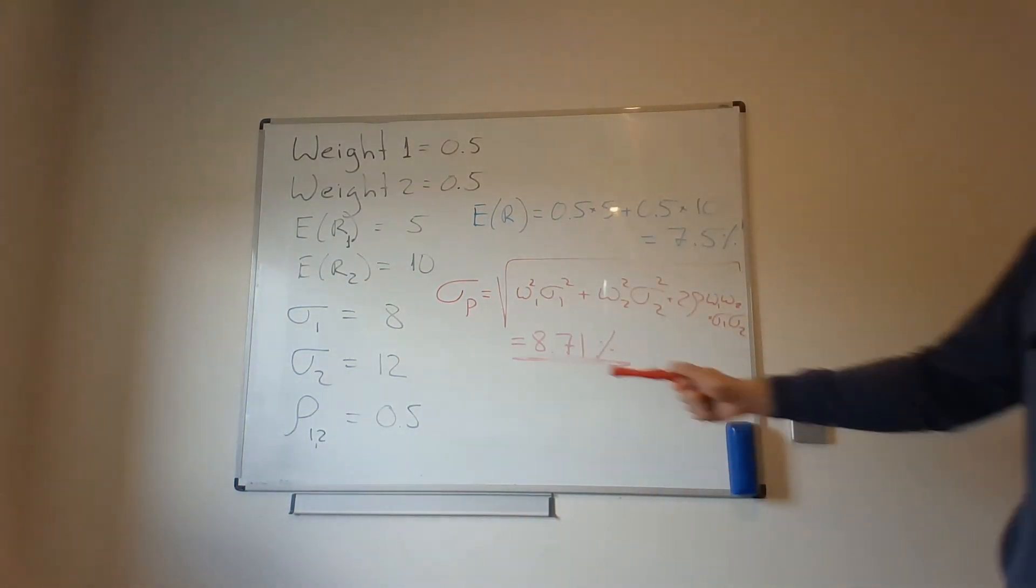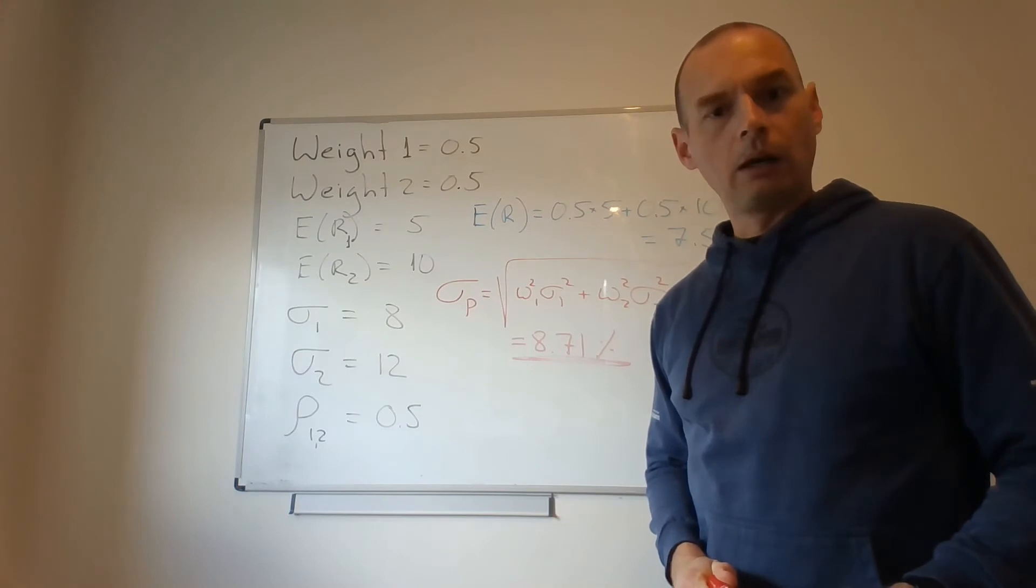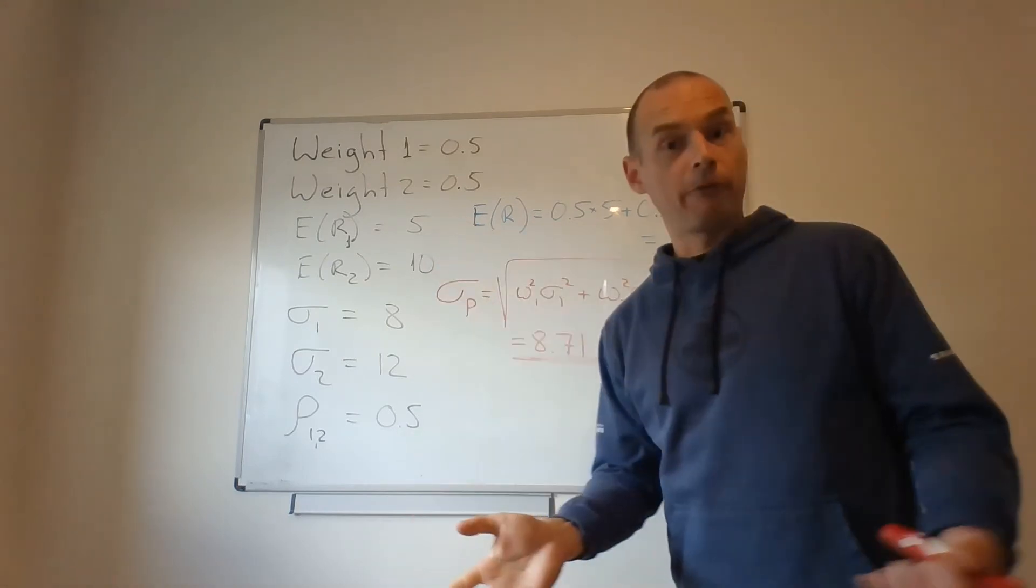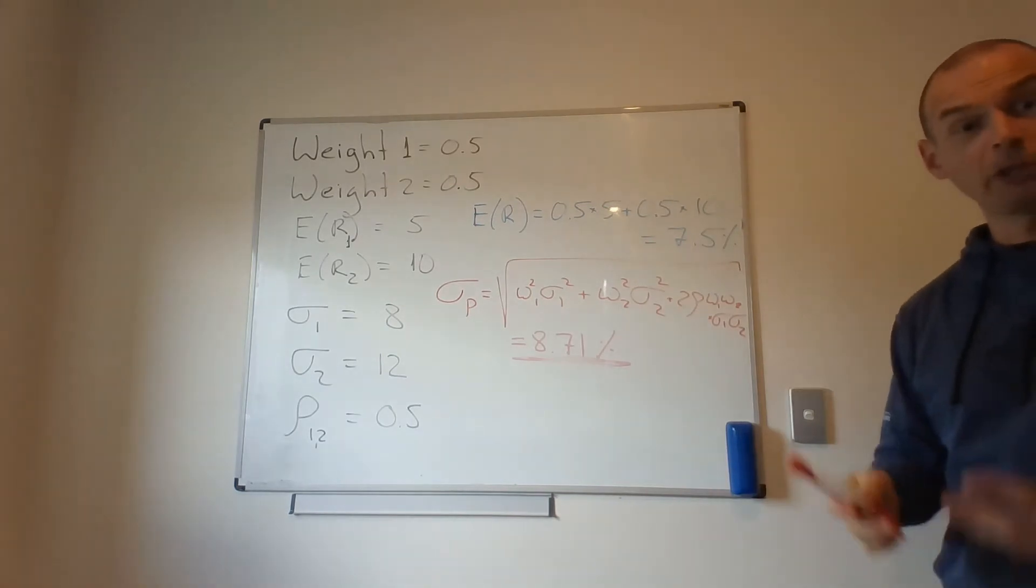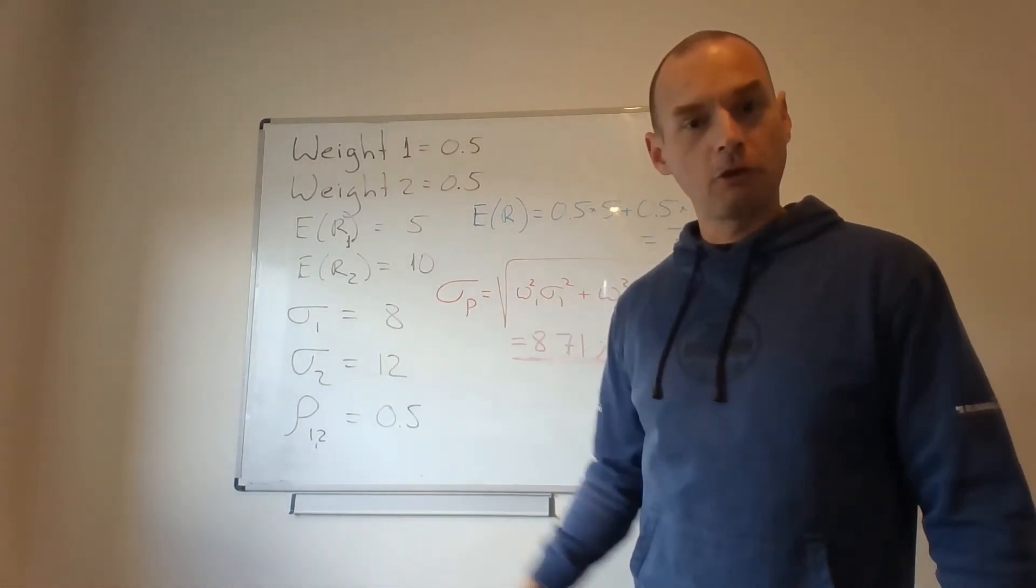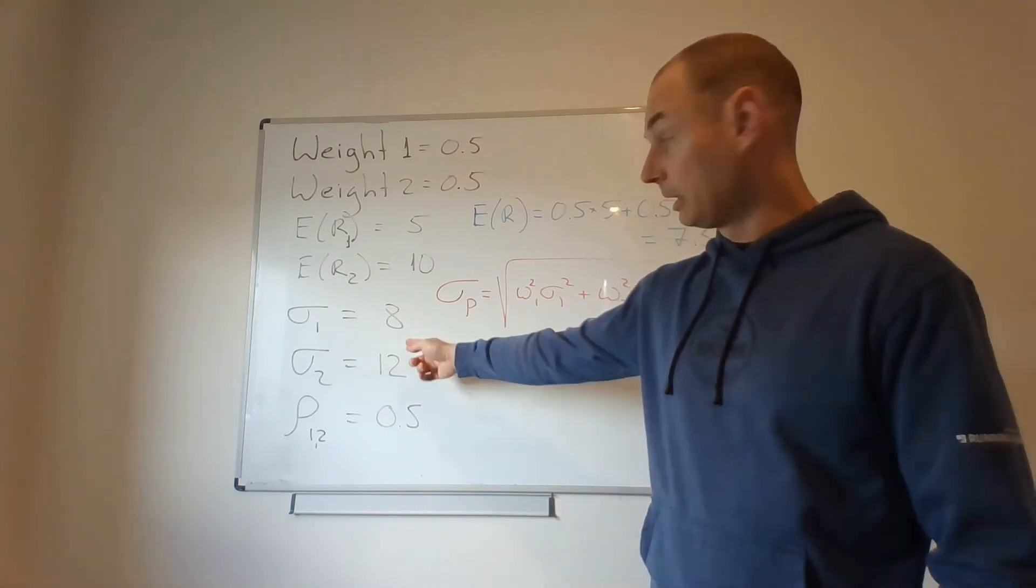You'd expect, since my returns, the return on my portfolio is just an average of returns on individual securities, wouldn't you expect the risk of my portfolio simply be the average of risk of the securities, meaning that it would be 10?